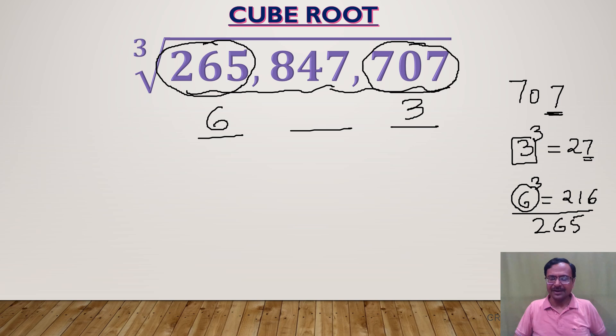Remember the rule: see the last triplet, it is 707, and I chose the last digit as 3. 3 cube is 27, so let us subtract that 27 from the last triplet. In subtracting this, I just want the middle digit. 7 minus 7 is going to get me a 0, so 10 minus 2 will get me 8 as the middle digit of this difference.